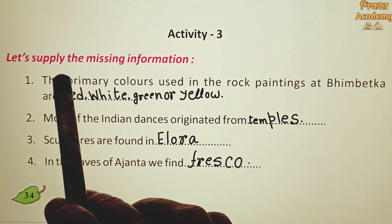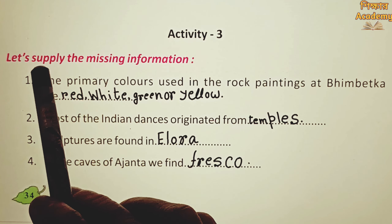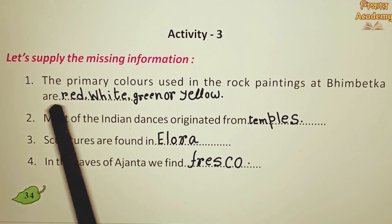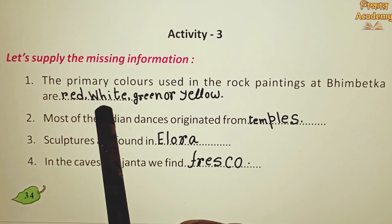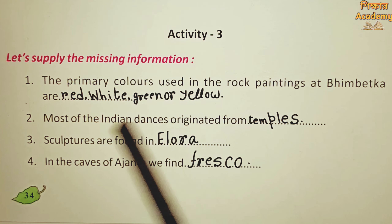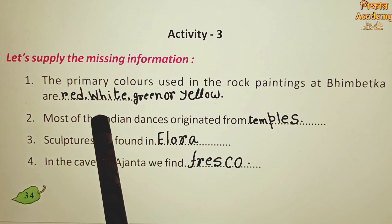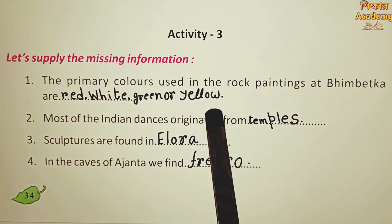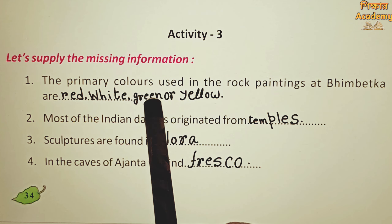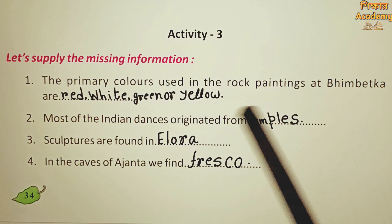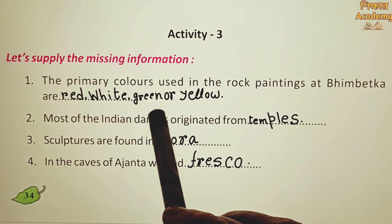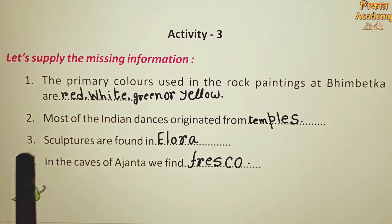Activity 3. Let's supply the missing information. One: the primary colors used in the rock paintings at Bhimbetka are red, white, green, or yellow.